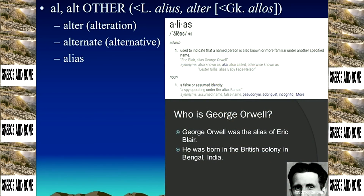So there's a guy that you've probably read, at least in high school — certainly in college. You read 1984, at least somewhere along the line, or Animal Farm, or both. And so his alias is George Orwell. That means it's his other name — it's the other way of referring to him, a false or assumed identity. And his real name, his given name, was Eric Blair. So that's an alias.